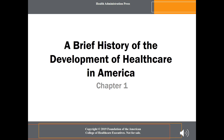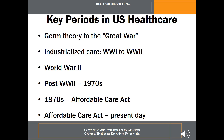Hello and welcome to chapter one, a brief history of the development of health care in America. In chapter one, we're going to cover key periods in U.S. health care: germ theory to the Great War, industrialized care, World War I to World War II, the World War II era, post-World War II to the 1970s, the 1970s to the Affordable Care Act, and then the Affordable Care Act to present day.